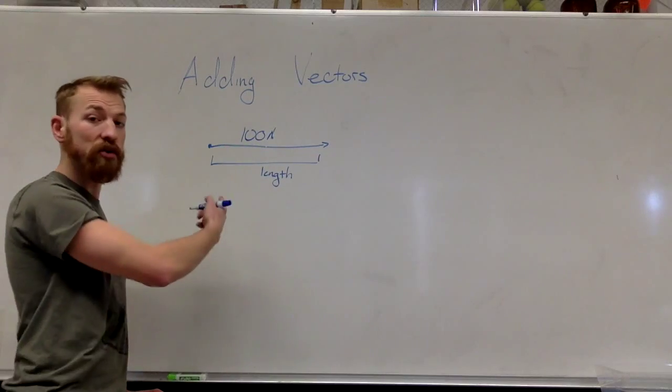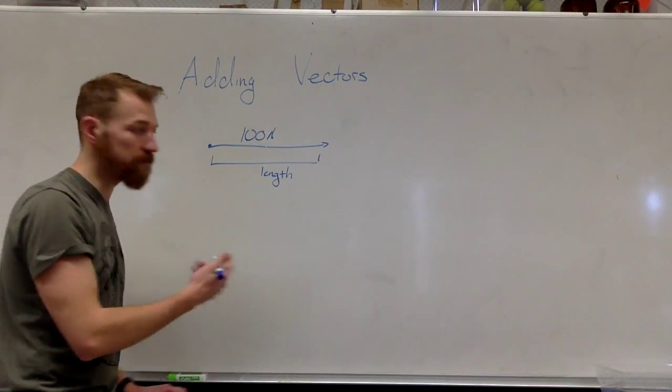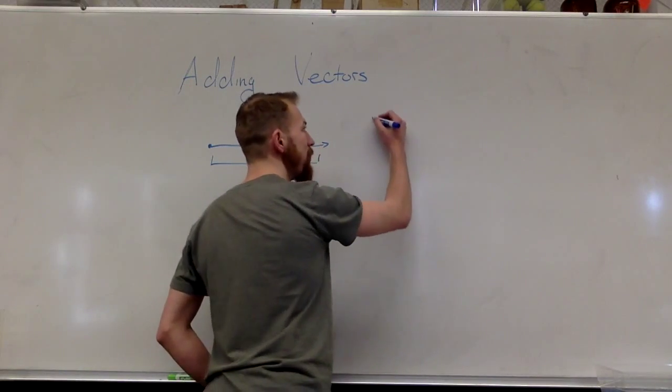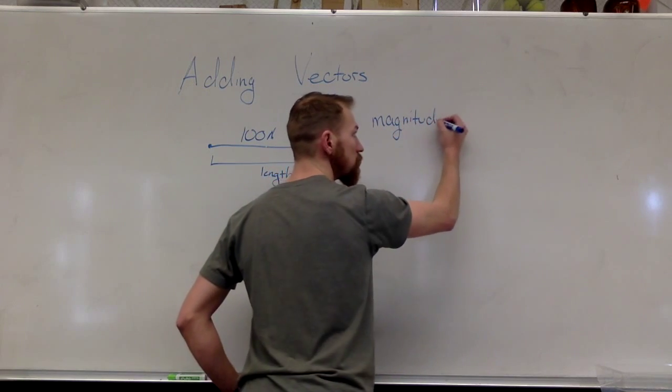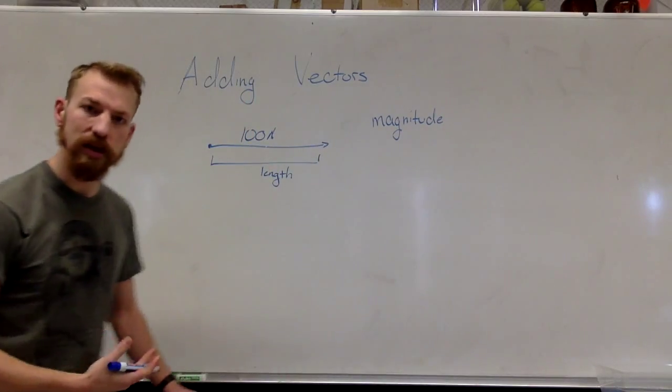So in this case, we have 100 Newtons worth of stuff. We call that the magnitude. So the amount is the magnitude.